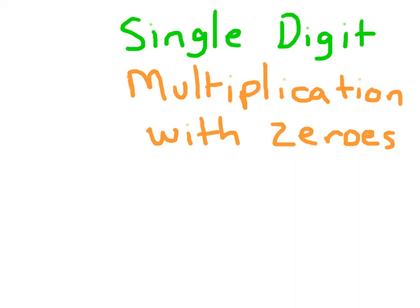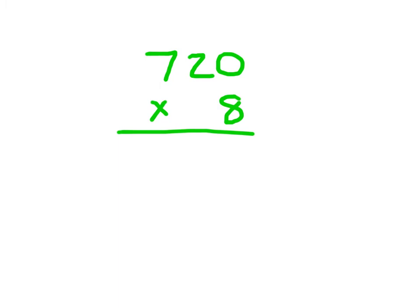Single digit multiplication with zeros. We might have this problem here, 720 times 8. We would start with the ones place, 8 times 0, which is 0.